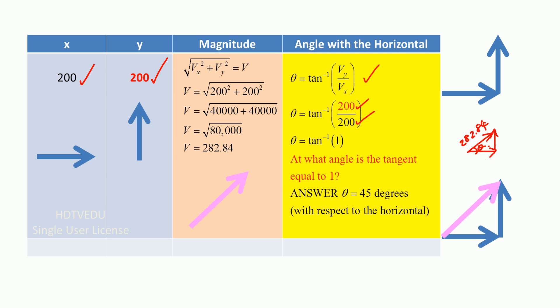So what is tan inverse 1? Basically, what we need is, what is that angle where the tangent is equal to 1? And the answer is 45 degrees. You have to put that into the calculator, and you will see it is 45 degrees with respect to the horizontal.